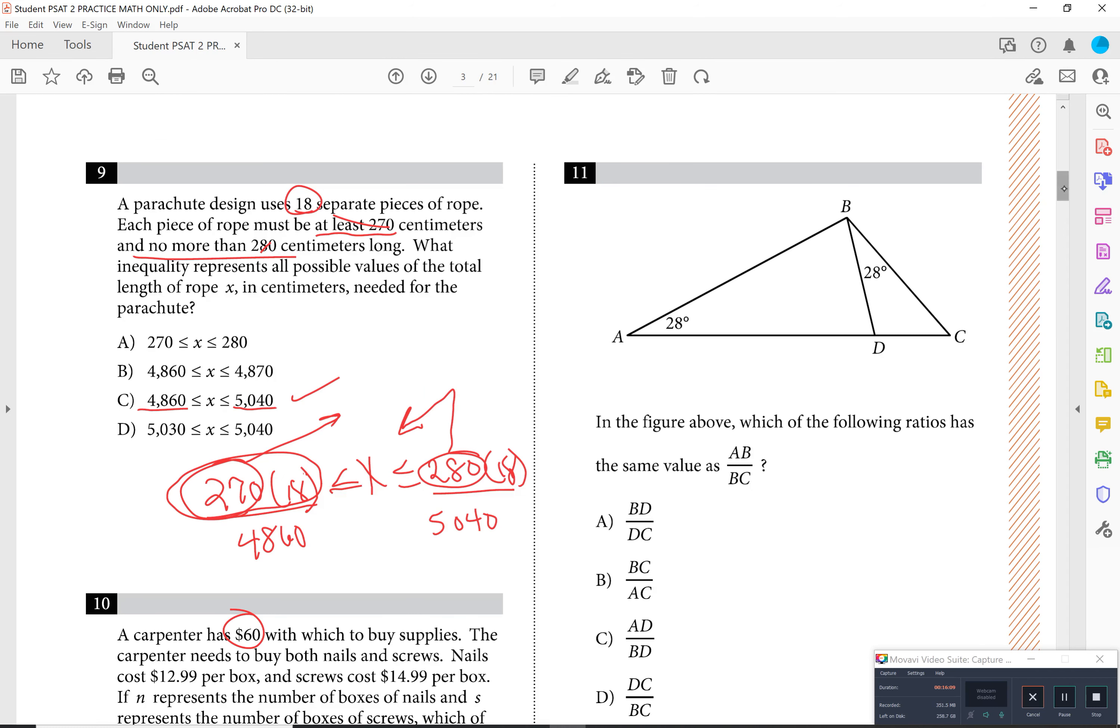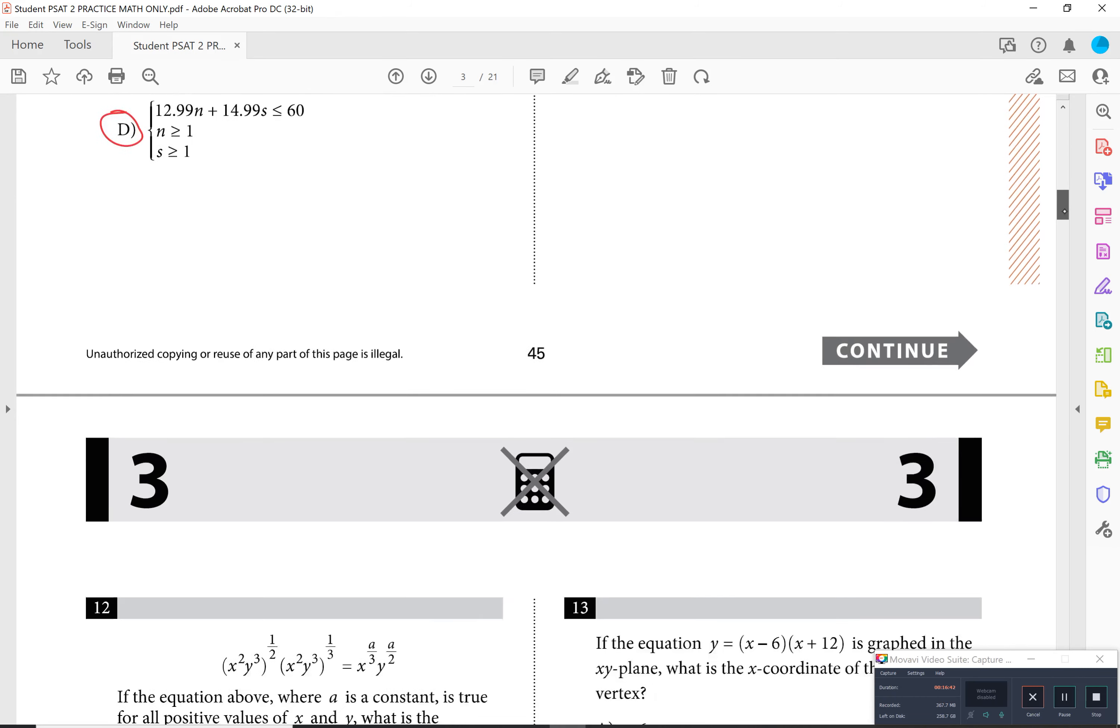This question is actually super, super easy. I want you to notice the 28 sitting here. Remember that angles and the ratio of the side that it faces should be equivalent. So notice that this faces this side here and this side happens to be BD. There's your BD. And this side here happens to be 28 and it faces side BC. That's your answer. Done. No thinking there, literally.